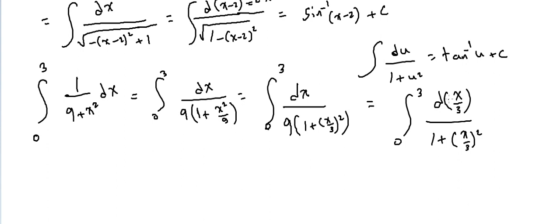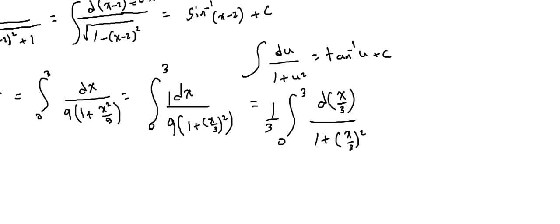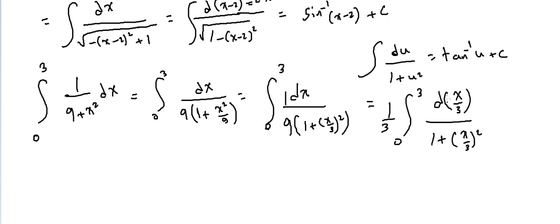With u = x/3, du = dx/3, meaning dx = 3·du. We already have 1/9 in front, and multiplying by 3 (from du) gives 1/9 × 3 = 1/3. So the integral becomes (1/3)·integral of du over (1 + u²).